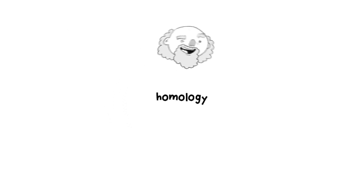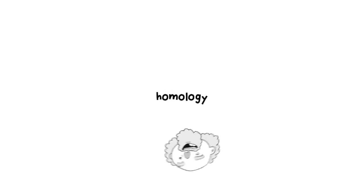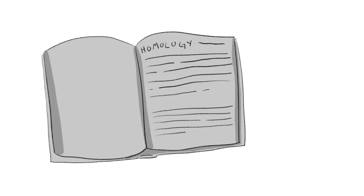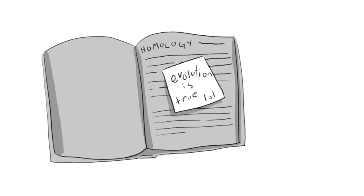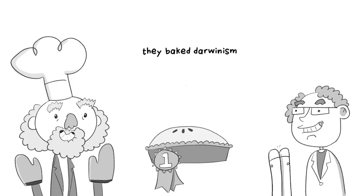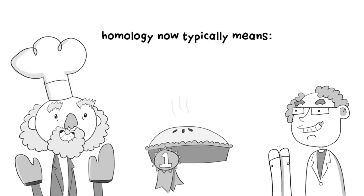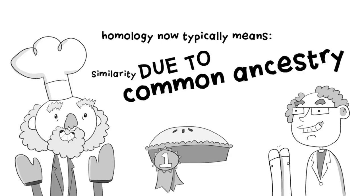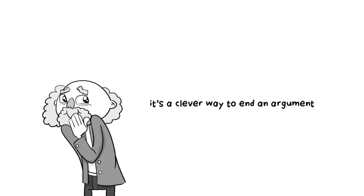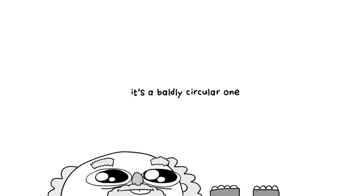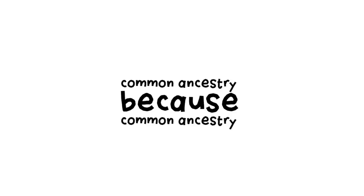Because the argument was so central to Darwin's case, his followers — LSS claims — eliminated the question by simply redefining the word from simple similarity to meaning similarity due to common ancestry, baking Darwinism into the definition. Homology now typically means similarity due to common ancestry. LSS calls this a clever but baldly circular argument: common ancestry, because common ancestry.